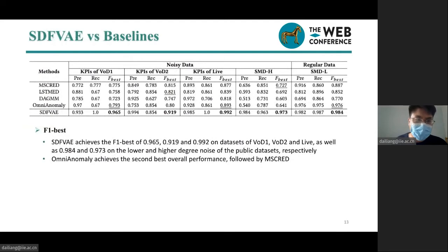Here we prefer to use F1 score to demonstrate the performance. It is observed that SDFVAE achieves F1 scores ranging from 0.92 to 0.99 on both regular and noisy datasets. Omni-Anomaly achieves the second-best overall performance, followed by MSCRED.